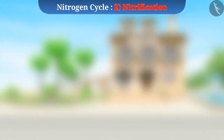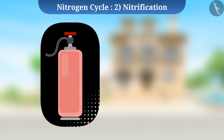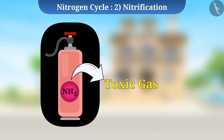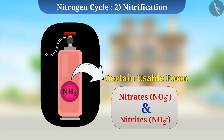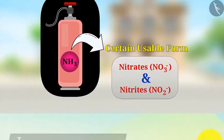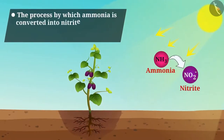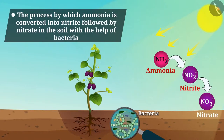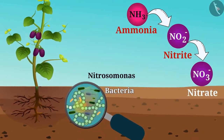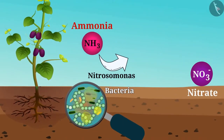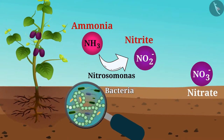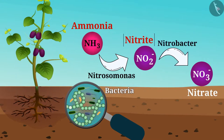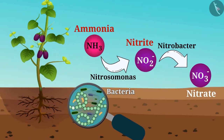The next stage is nitrification. Ammonia is a toxic gas. Therefore, it must be converted to a usable form. The process by which ammonia is converted into nitrite followed by nitrate in the soil with the help of bacteria is called nitrification. Bacteria such as Nitrosomonas oxidize the ammonia present in the soil and convert it into nitrite. Further, bacteria such as Nitrobacter oxidize nitrites into nitrates, which is a form usable by plants.